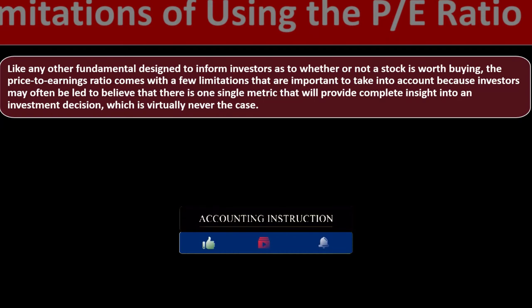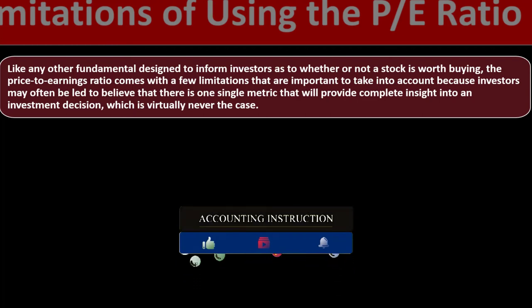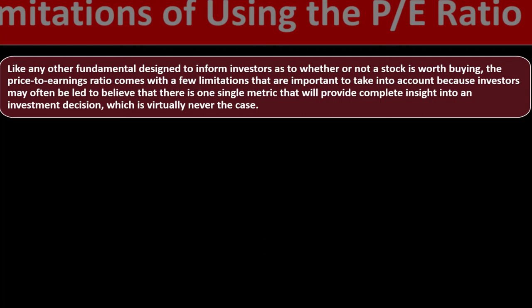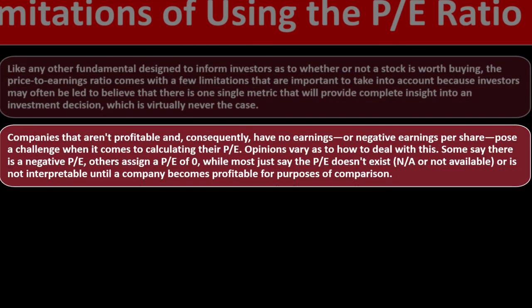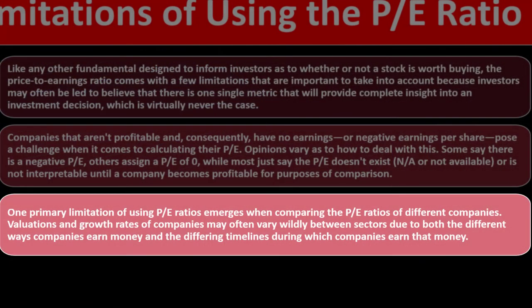Limitations on using the PE ratio: Like any fundamental metric designed to inform investors whether a stock is worth buying, the PE ratio comes with limitations. Investors may be led to believe that one single metric will provide complete insight into investment decisions — but no one metric can do it all. Companies that aren't profitable and have no earnings or negative EPS pose a challenge when calculating their PE. Opinions vary on how to deal with this: some say there is a negative PE, others assign a PE of zero, while most say the PE doesn't exist or isn't interpretable until a company becomes profitable.